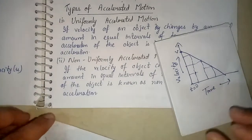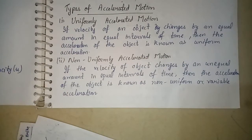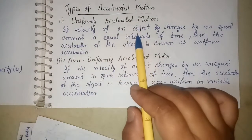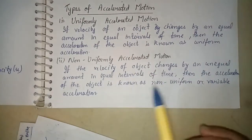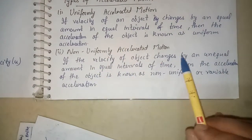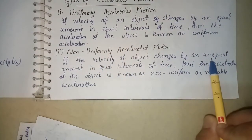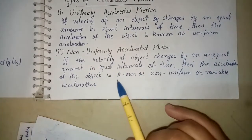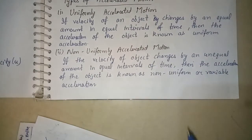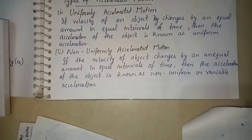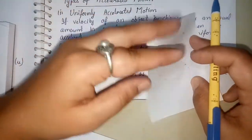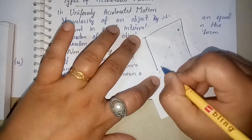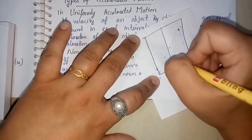Now let us talk about non-uniformly accelerated motion. In non-uniformly accelerated motion, the difference is that the velocity does not change by an equal amount in equal time intervals. So the acceleration produced is non-uniform or variable acceleration. Let us discuss the example.